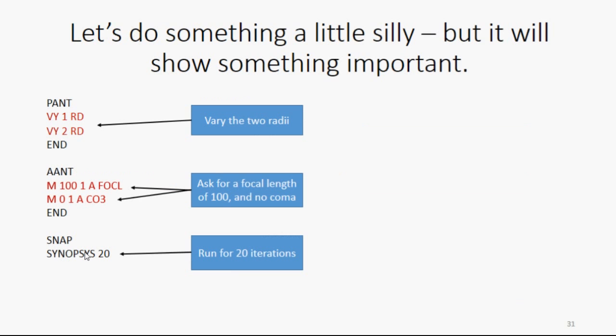Let's do something a little silly, but it will show something important. In the PANT section, define two variables. Surface 1 radius, and surface 2 radius. And we're going to have only two aberrations in the ANT file, just for this little exercise here. So, ask for a value of 100 for the focal length, and ask for a value of 0 for the coma. And run it for 20 iterations.